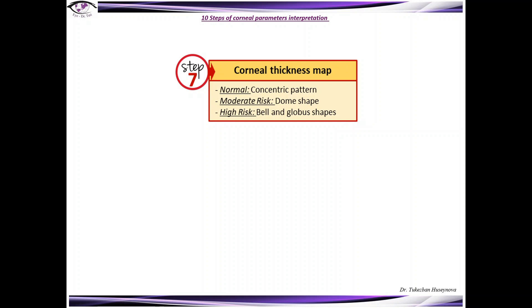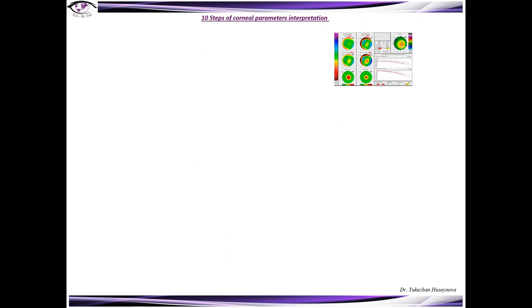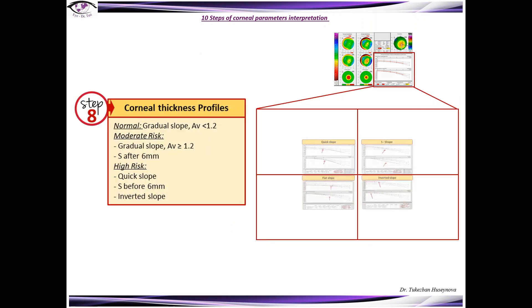Step 7: Corneal thickness map. Describe for yourself if the patient has a dome shape, bale or globus shape or normal concentric pattern. Step 8: Describe corneal thickness profiles. The normal, as you know already, should be gradual red slope with average less than 1.2.